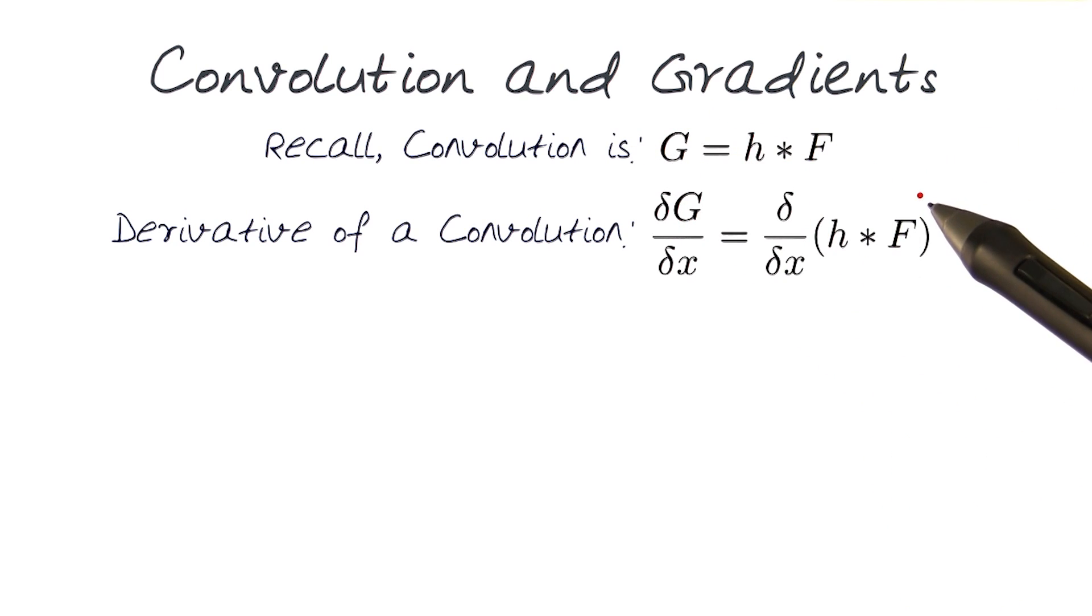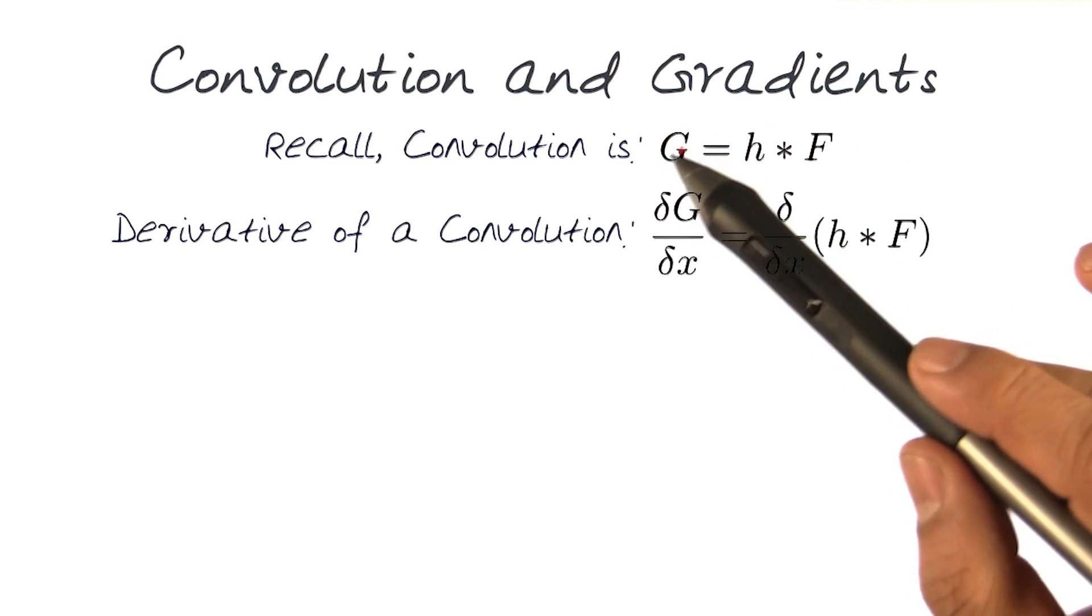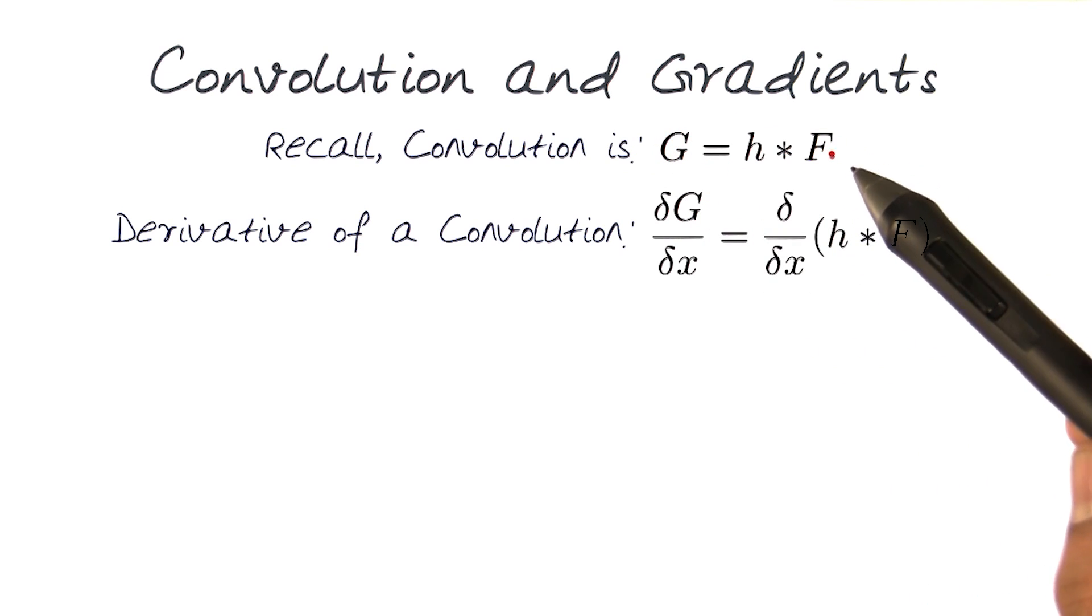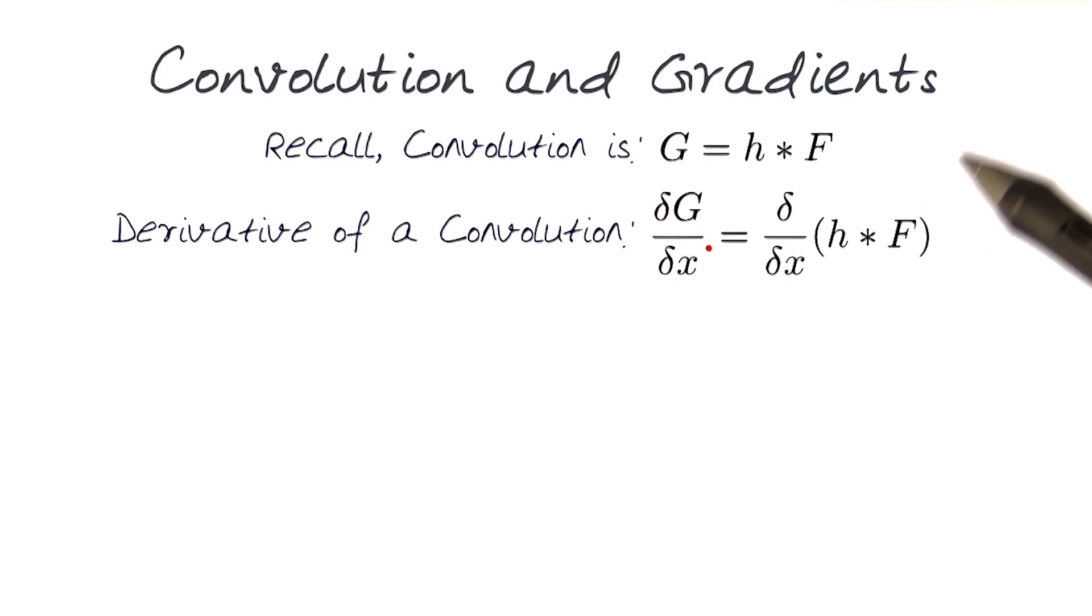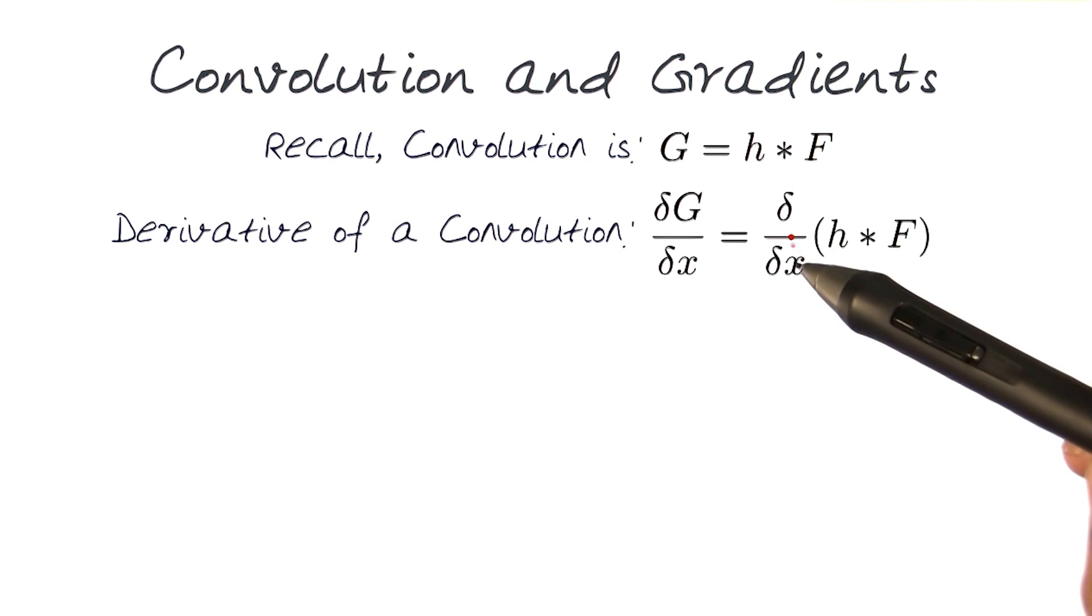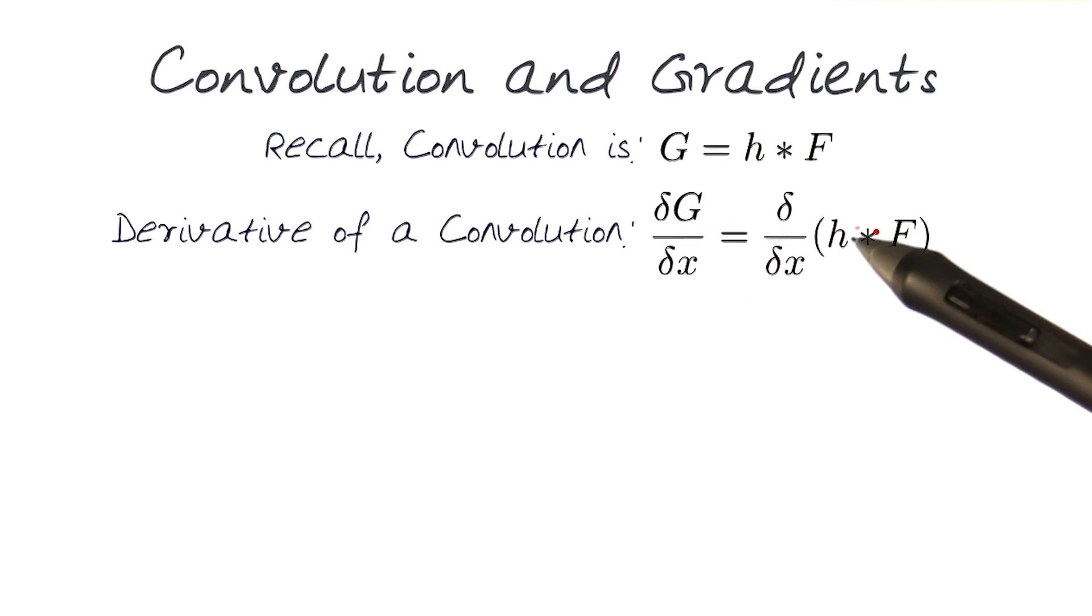We need to ask the question, what happens if I take this convolution formulation and do a derivative in x? We would do it separately for y. If I do a derivative of this, that means I take the derivative of the convolution.